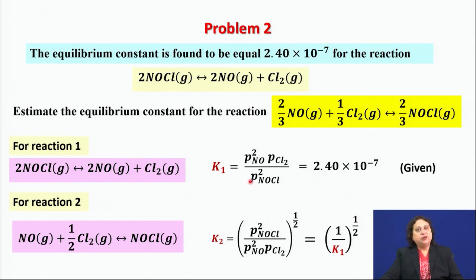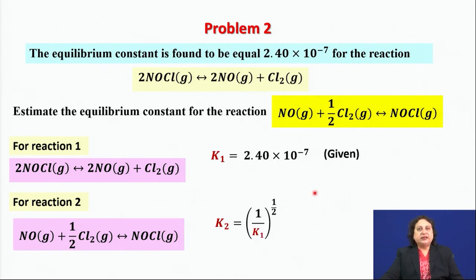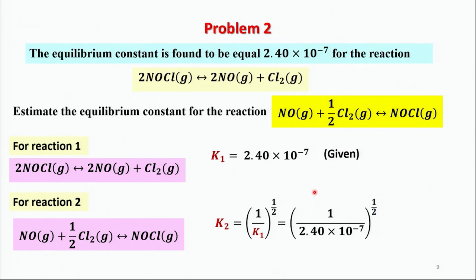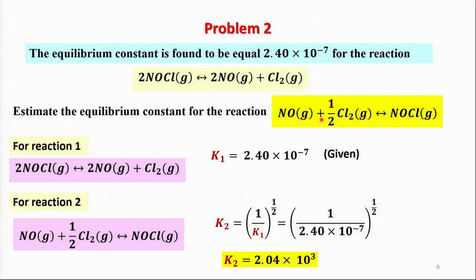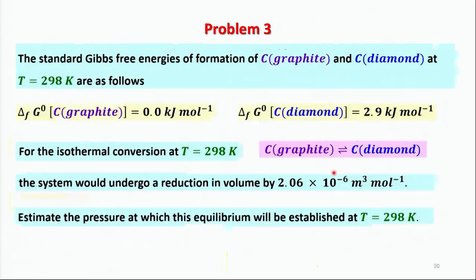Knowing K₁, I can calculate K₂. Substituting K₁ = 2.4 × 10⁻⁷ into the expression K₂ = 1 / √K₁ and evaluating gives K₂ = 2.04 × 10³. This is the equilibrium constant for the NOCl formation reaction.